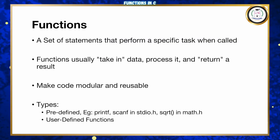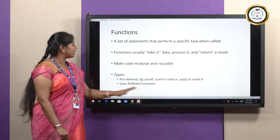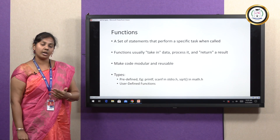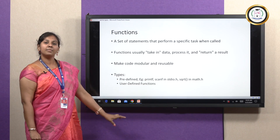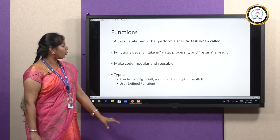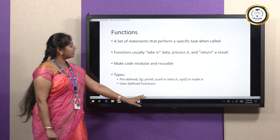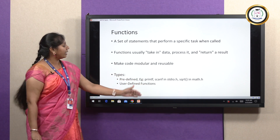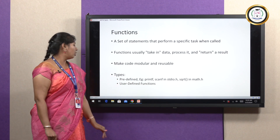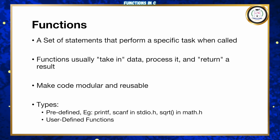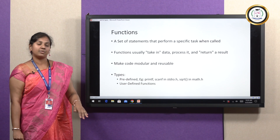We have two types of functions: predefined and user-defined. Functions like scanf and printf, which we use in all our C programs, are defined under the header file called stdio.h. These definitions are available in the header files, so whenever you want to use those functions, you just need to include the header file and you can use them as many times as you want without redefining them.